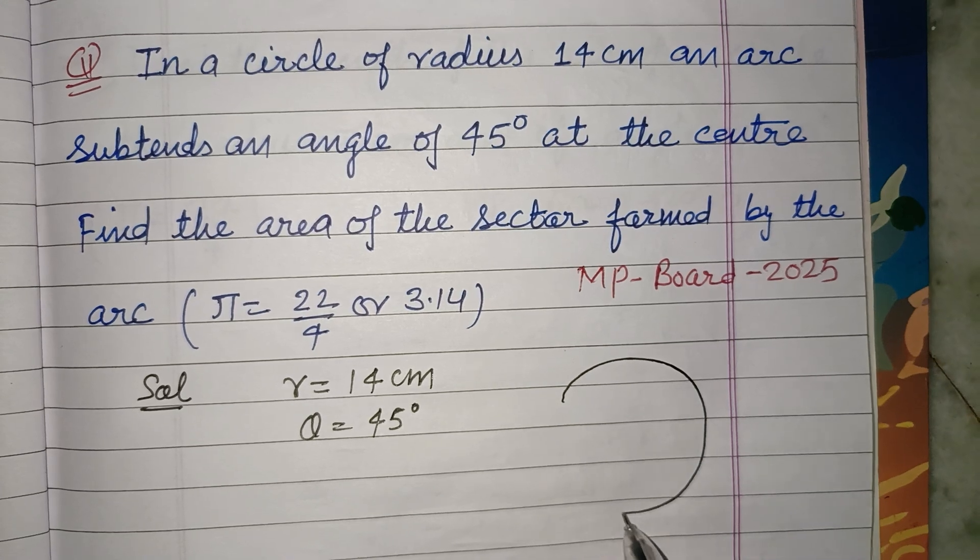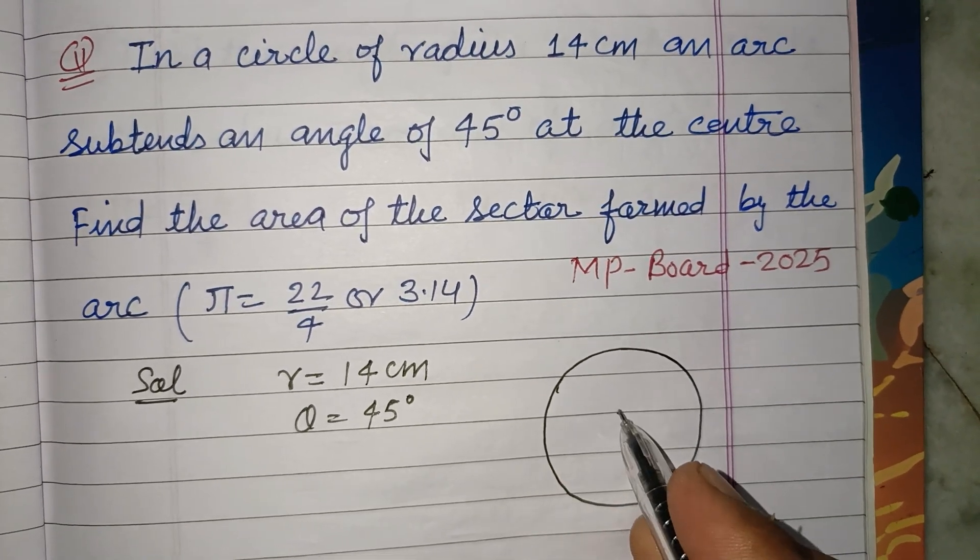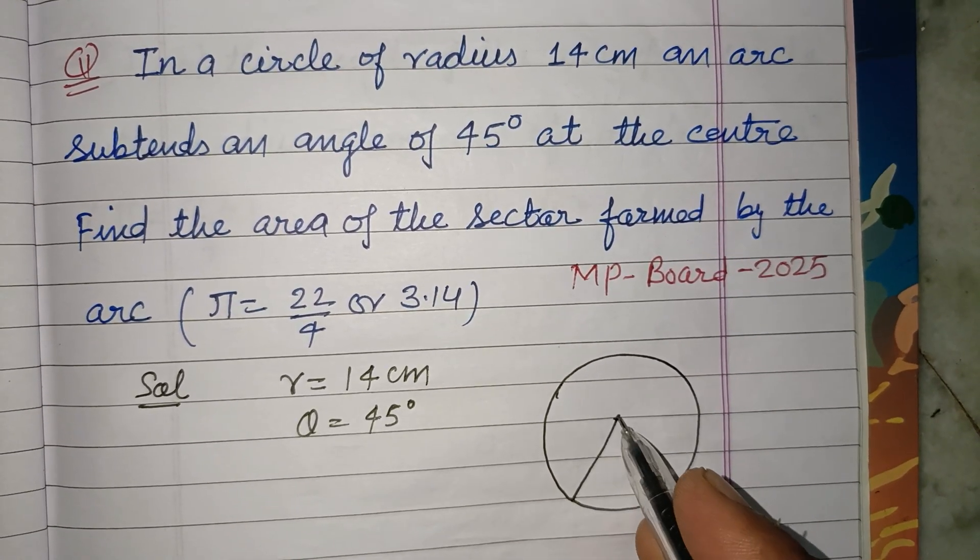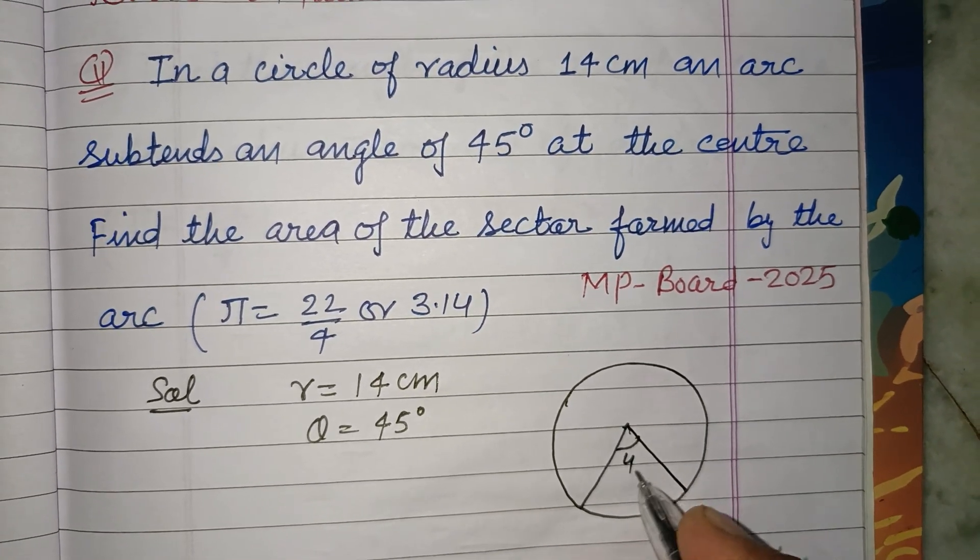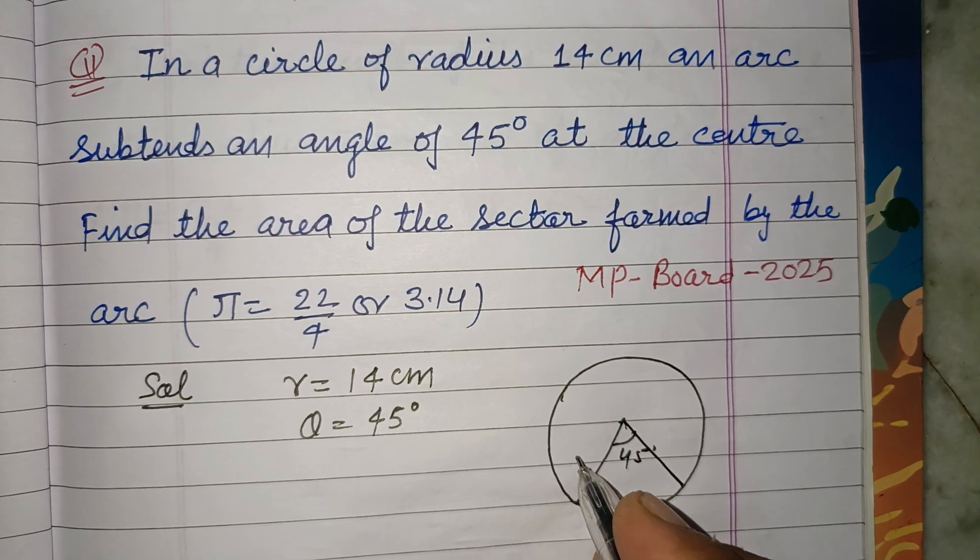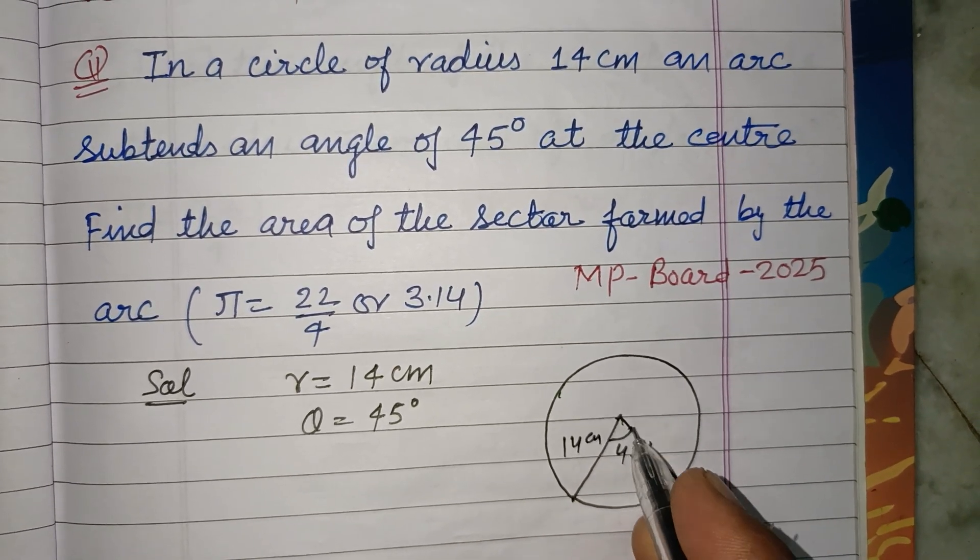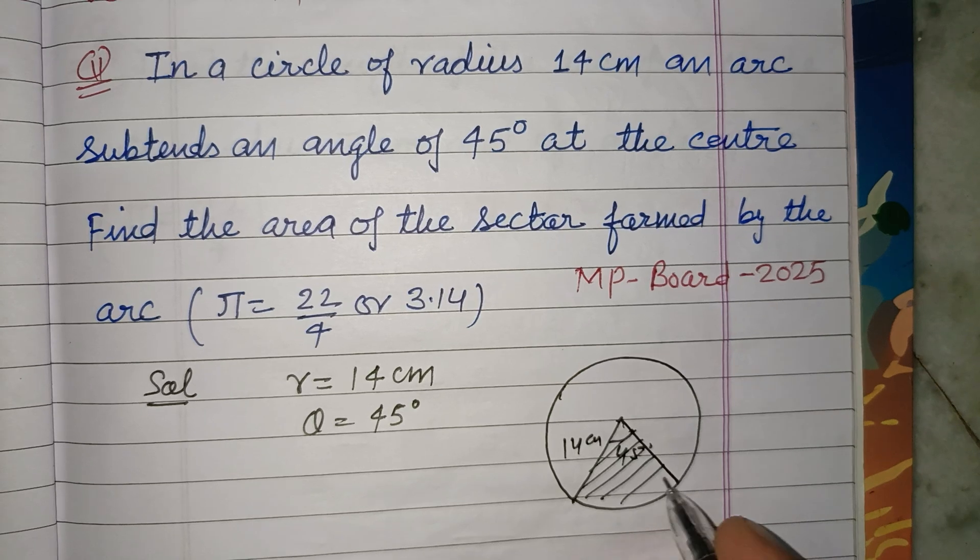So students, this is the circle and angle subtended by the arc is 45 and radius is 14 cm, and area of this sector is asked.